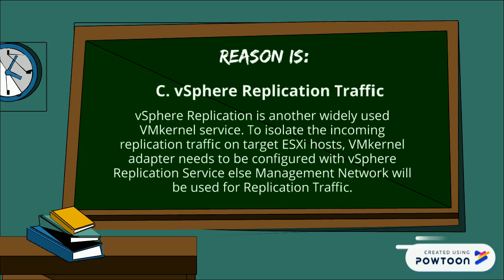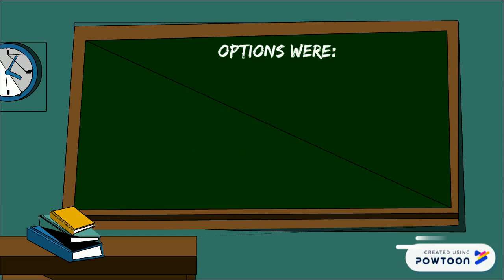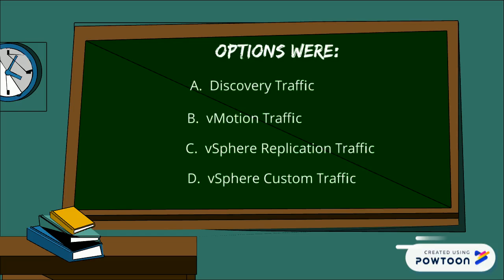The reason for option C is that vSphere replication traffic is another widely used VM kernel service. To isolate the incoming replication traffic on the target ESXi host, the VM kernel adapter needs to be configured with the vSphere replication service, otherwise management network traffic will be used for replication.